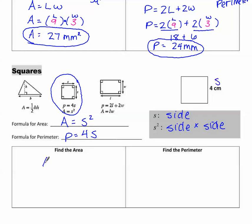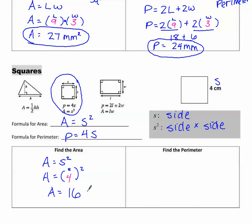To find the area, write the original formula first, then write it with blanks: A equals S squared. S is 4, so we have 4 to the second power. 4 squared is 16, so A equals 16. Put the units — centimeters — and since it's area, it's squared. So A equals 16 centimeters squared.